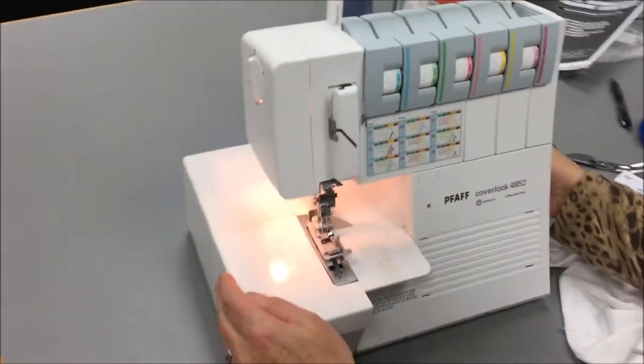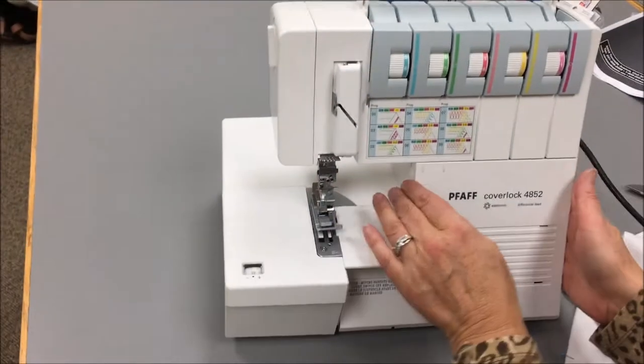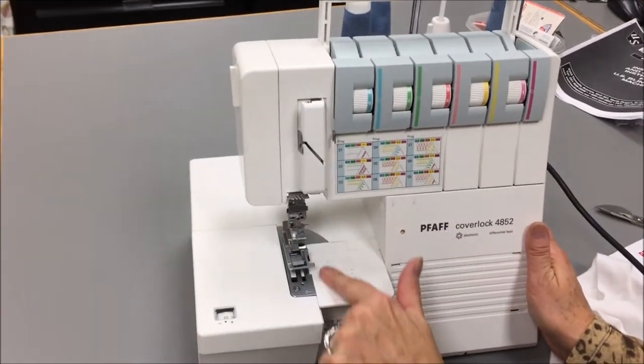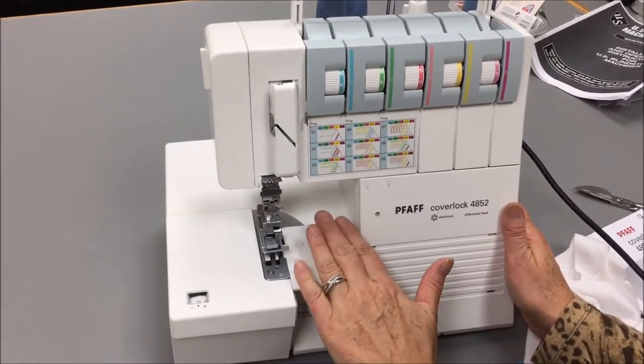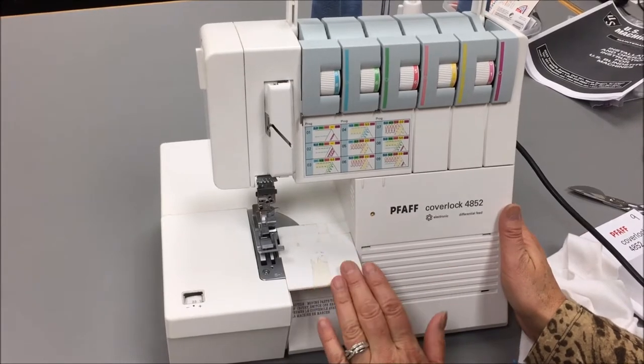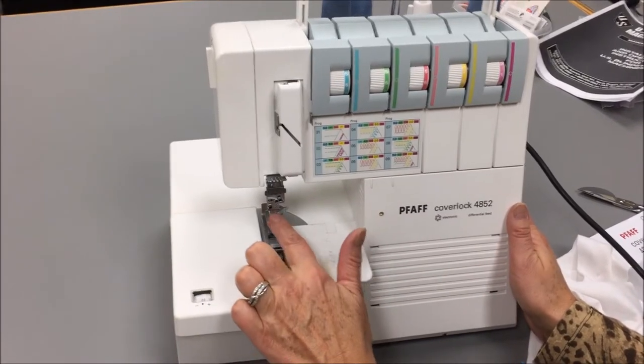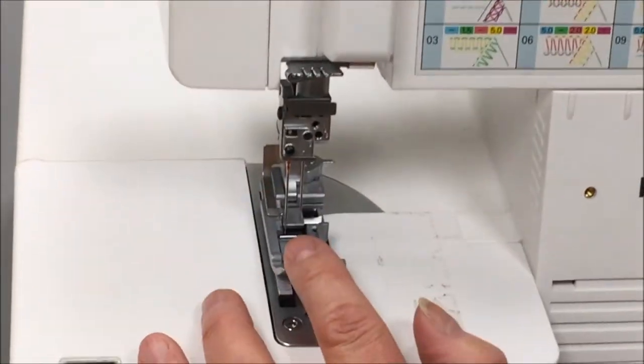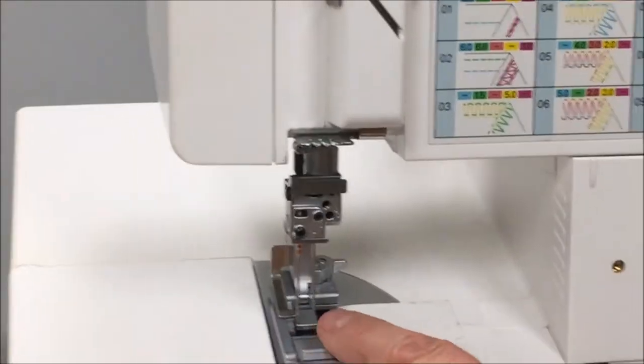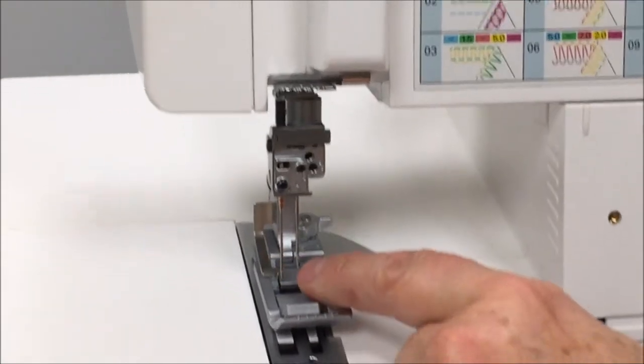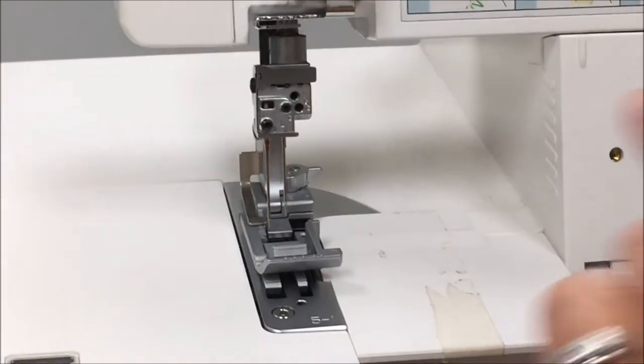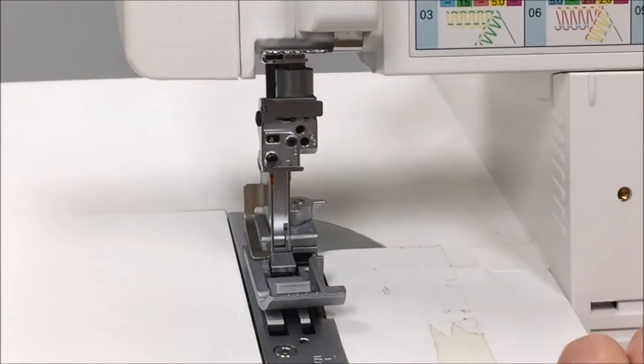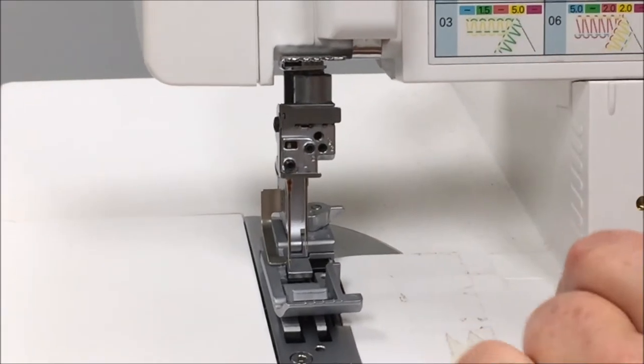We're back to the front of the machine. I want to show you that we have a little table here that's set up just for the cover lock stitch. Our needles are in the front position instead of the back position and wider apart. You will notice that the left needle appears longer than the right needle. They're just in a different position and that is normal to have the left needle looking longer.